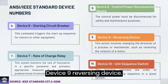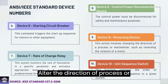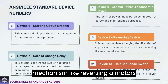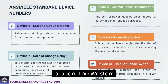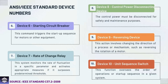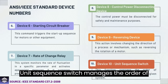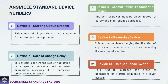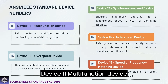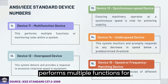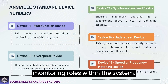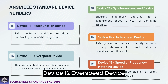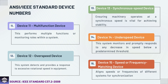Device 9: Reversing device — alters the direction of a process or mechanism, like reversing a motor's rotation. Device 10: Unit sequence switch — manages the order of operations or startup sequences in a system. Device 11: Multi-function device — performs multiple functions or monitoring roles within a system. Device 12: Overspeed device — detects and responds to excessive speed in rotating equipment.